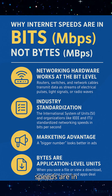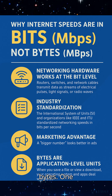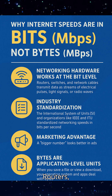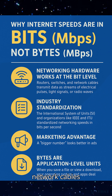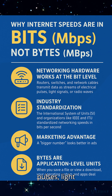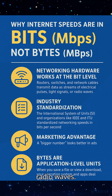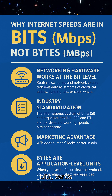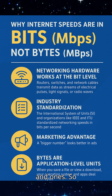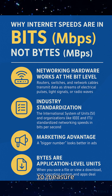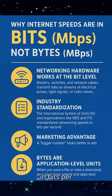Why Internet Speeds Are In Bits, Not Bytes. Reason 1: Networking hardware works at the bit level. Routers, switches, and network cables transmit data as streams of electrical pulses, light signals, or radio waves. These signals represent bits — zeros and ones. So from an engineering perspective, it makes sense to measure transmission in bits per second.